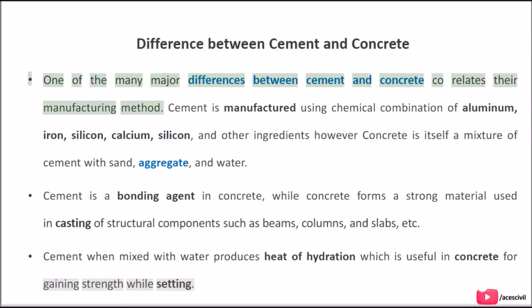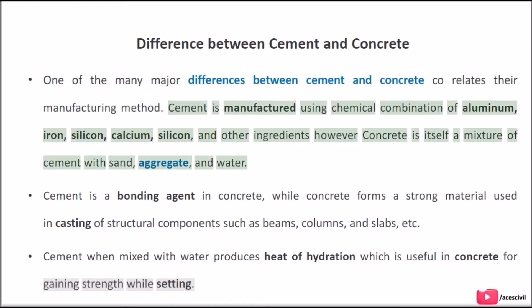One of the many major differences between cement and concrete relates to their manufacturing method. Cement is manufactured using a chemical combination of aluminum, iron, silicon, calcium, and other ingredients. However, concrete is itself a mixture of cement with sand, aggregate, and water.